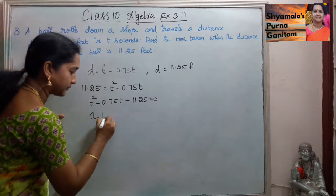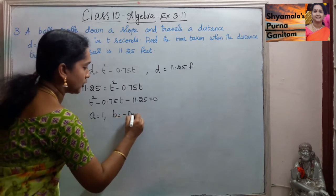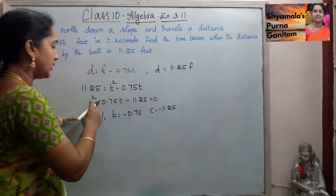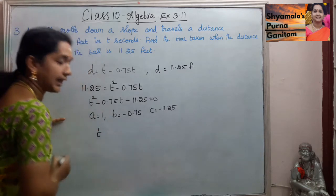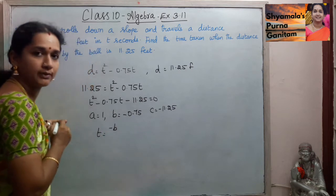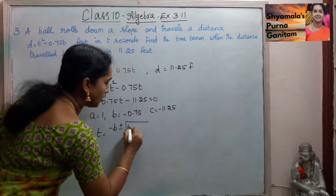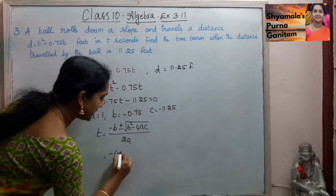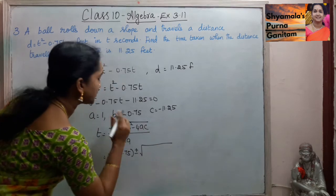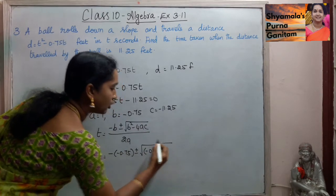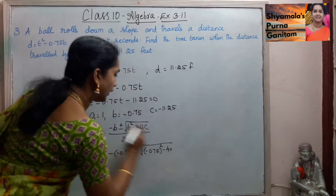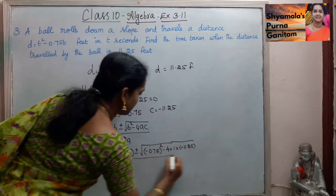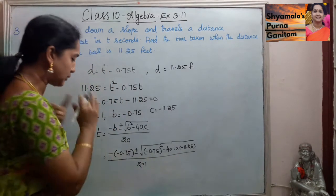So, a equals 1, b equals minus 0.75, and c equals minus 11.25. Now we will find the value for t. Instead of x, we will take t. So, t equals minus b plus or minus root of b squared minus 4ac, divided by 2a. This equals minus of minus 0.75 plus or minus root of (minus 0.75) squared minus 4 into 1 into minus 11.25, all divided by 2 into 1.